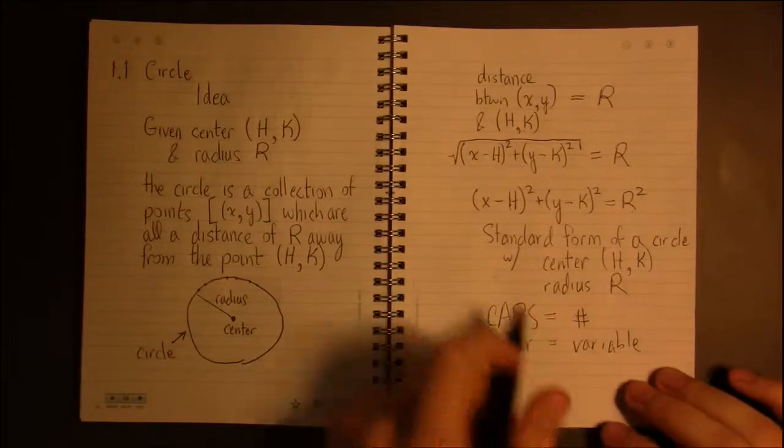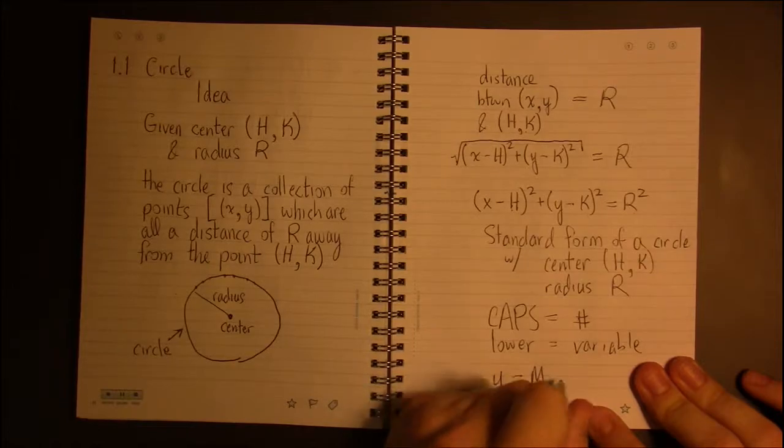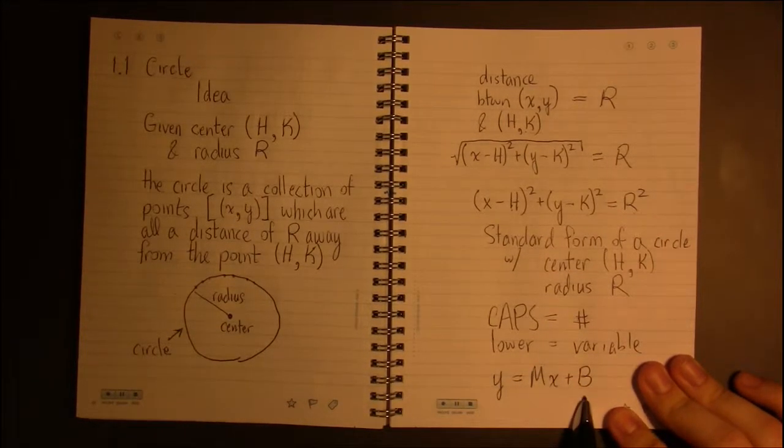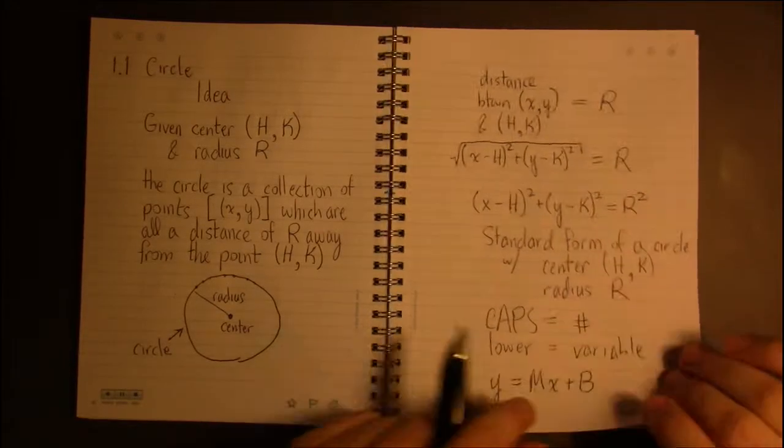Kind of like when you write the equation for a line. If I write it in this style here, Y equals MX plus B. When your answer is supposed to be a line, well you have to find a number for M and you have to find a number for B, but you leave Y and X alone.